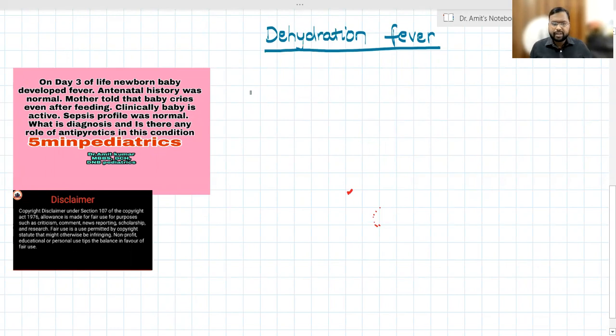What is the mechanism behind dehydration fever? The first one is poor heat dissipation mechanism in newborns. The second mechanism is due to inadequate feeding.